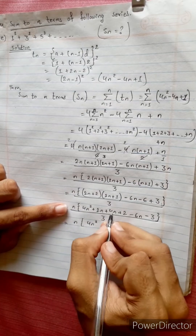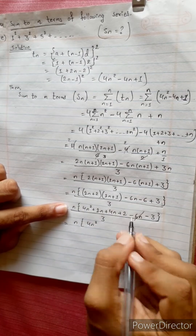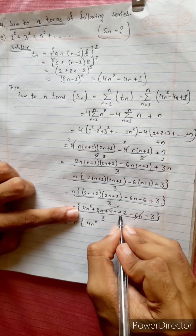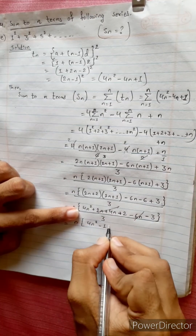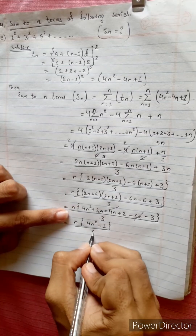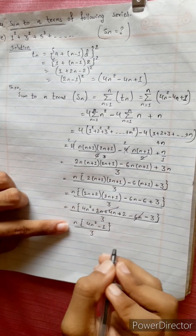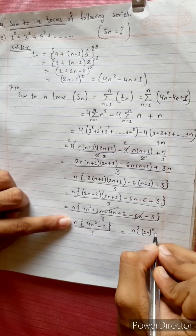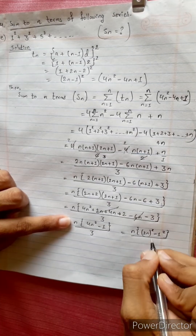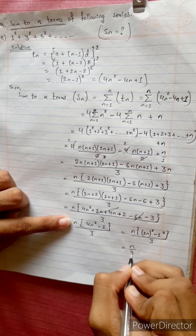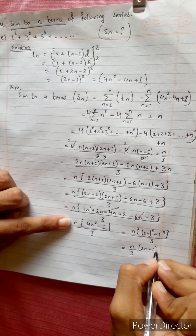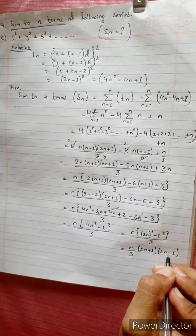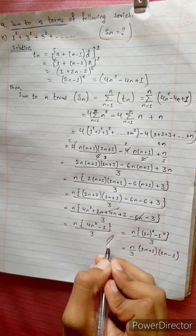After multiplying: 4n squared plus 6 minus 6n plus 6n minus 3 plus 2 equals minus 1, divided by 3. We can also write this as n times (a squared minus b squared) divided by 3, which gives us (2n+1)(2n-1), or equivalently n(4n squared minus 1) divided by 3. This is the answer.